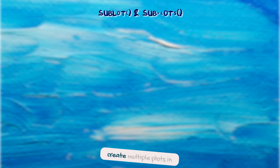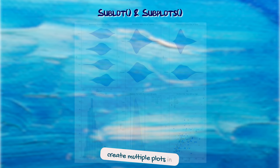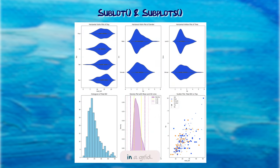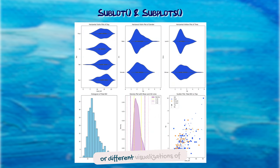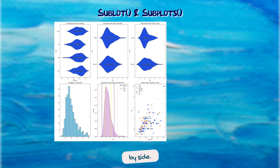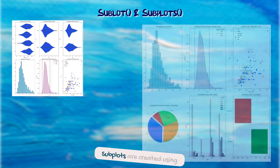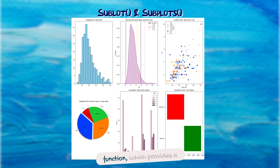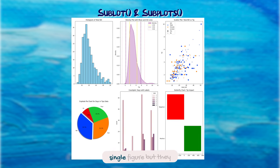Subplots allow you to create multiple plots in a single figure arranged in a grid. This is useful for comparing different datasets or different visualizations of the same data side by side. Subplots are created using the subplot or subplots function, which provides a convenient way to manage multiple axes within a single figure.